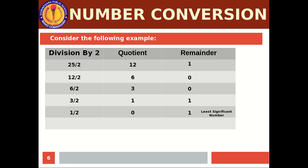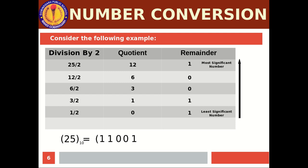The last remainder calculated is the least significant bit and the very first remainder is the most significant bit. We write them from bottom to top: starting from least significant to most significant — 1, 1, 0, 0, 1. So 25 is a decimal number and its equivalent binary number is 11001. Decimal numbers have base 10 and binary numbers have base 2.